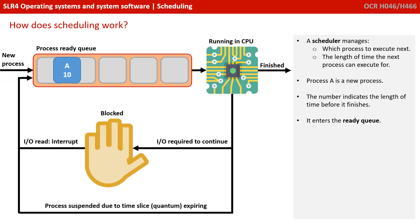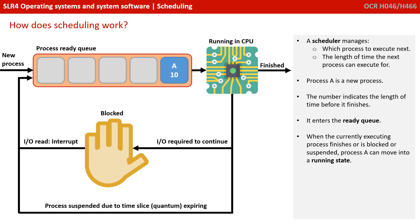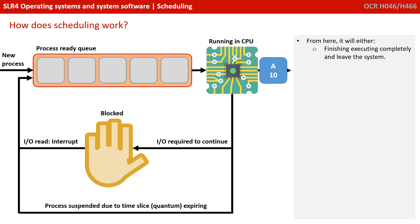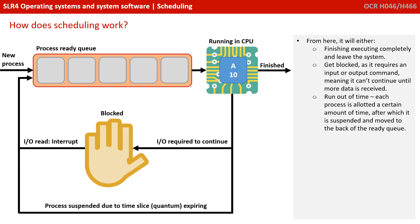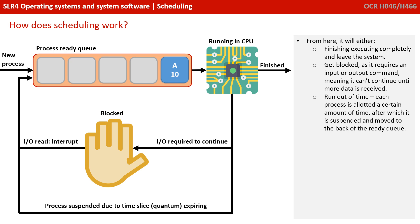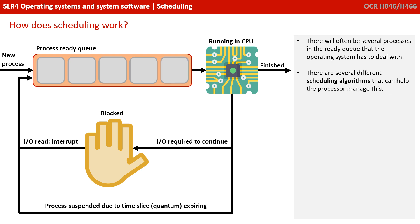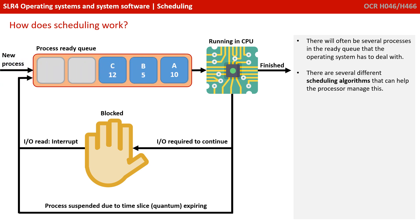Process A is a new process — the number is abstract and indicates the length of time before it finishes. At the moment it's in what we call the ready queue. When the currently executing process finishes, is blocked, or suspended, Process A can move into a running state. From here it will either finish executing completely and leave the system, get blocked as it requires an input or command, or run out of allotted time. Typically each process gains a certain amount of time in the processor, after which it's suspended and moved to the back of the ready queue. There will often be several processes in the ready queue that the operating system has to deal with, and there are several scheduling algorithms that can help the processor manage this.